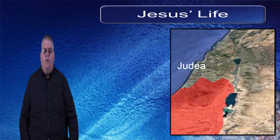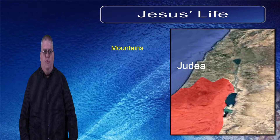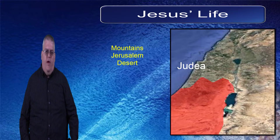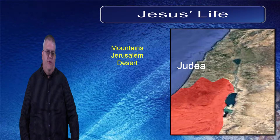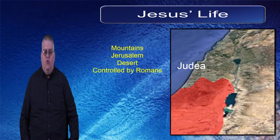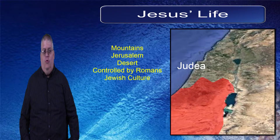And then in the south was the territory of Judea. Much of the story occurs in the mountains of Judea, where the capital of Jerusalem is located. Judea is also characterized by the desert wilderness in the south and east. In the time of Christ, Judea was controlled directly by Rome, under Roman governors, but the population was more strictly Jewish in culture.